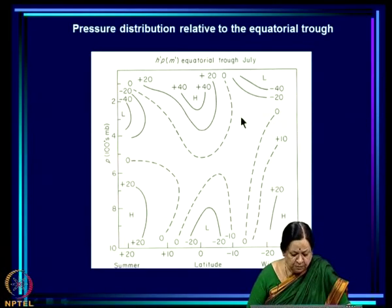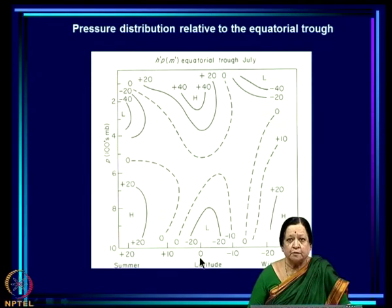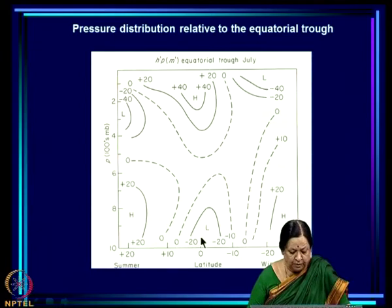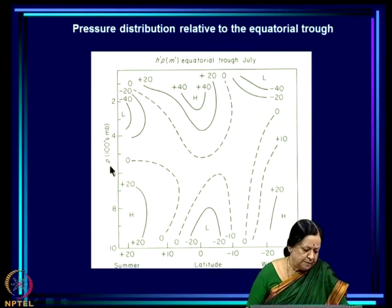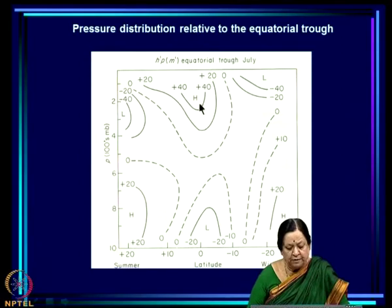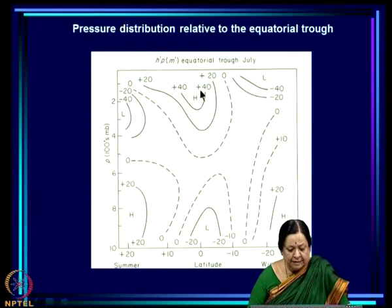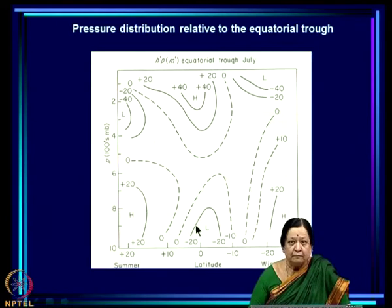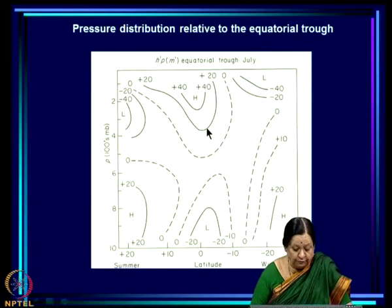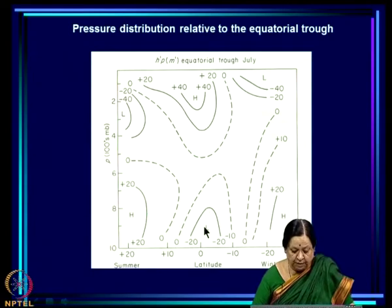The pressure distribution relative to the equatorial trough at different levels shows that near the surface and up to 2 kilometers or more there is a low pressure belt — the equatorial trough. Above that, at around 200 millibars, there is a high overlying the low, from which air diverges and then descends in the surrounding region. This is the vertical structure of the pressure distribution around the equatorial trough.